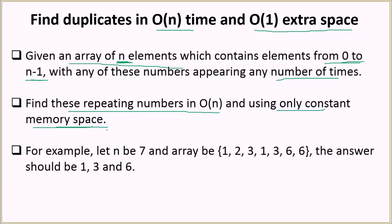Let's look at an example. Here n is equal to seven, that is the size of the array, so this array has seven elements and the range of the elements is 0 to n minus 1, that is 0 to 6. In this array the repeating elements are 1, 3, and 6 — 1 appears twice, 3 appears twice, and the last two elements are both 6. So the answer is 1, 3, and 6.